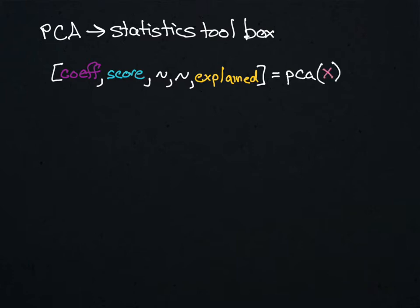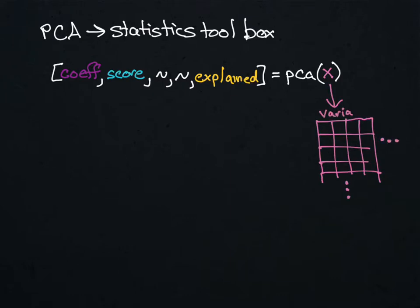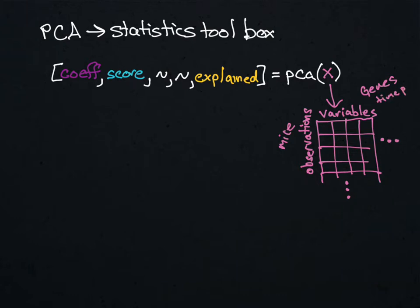To do PCA, you simply type PCA of your variable. MATLAB expects the input to the PCA function to have your variables across the top and your observations in the rows — so variables in the columns, observations in the rows. If you were doing something with gene expression, your variables might be the different genes and your observations might be the mice. If you were doing time series data, you might have the time points as your variables and then your subjects as the observations. The variables go across the top, the observations go down the rows.